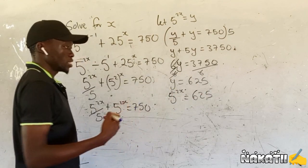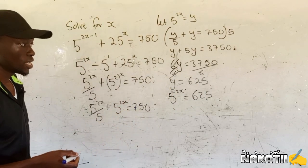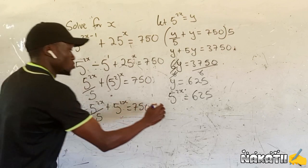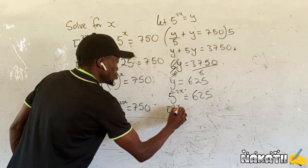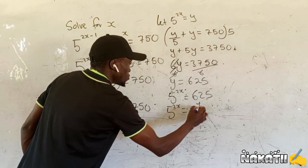This one can be written to base 5 as 5^4. We're going to have 5^(2x) equals 5^4.